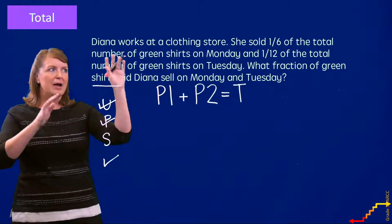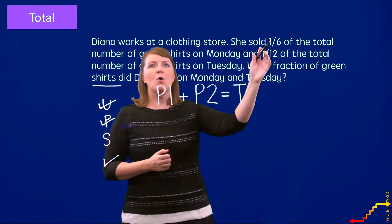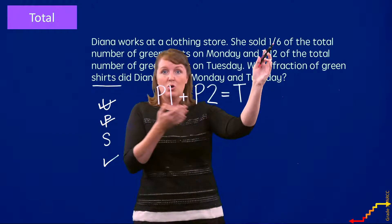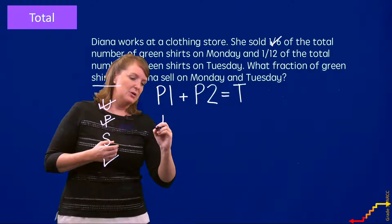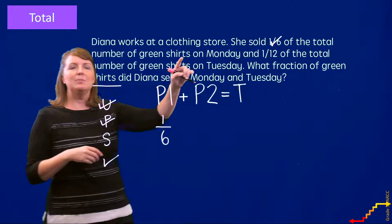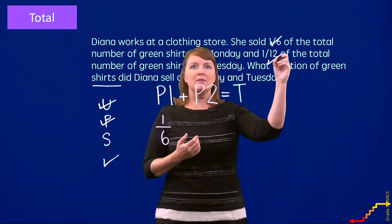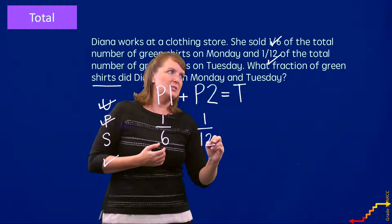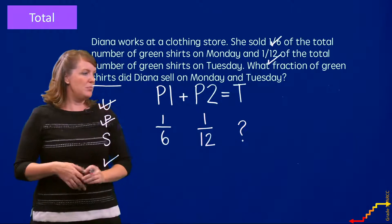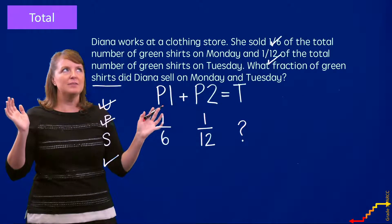Now I've got to solve this problem. I'm going to find the numbers and plug them into my total equation. She sold one sixth of the total green shirts on Monday — does one sixth tell us about the parts or the total? One sixth tells us about one of the parts, so I write it under P1 and check it off. She sold one twelfth of the total shirts on Tuesday — does that tell us about one of the parts or the total? That tells us about one of the parts, so I write that under P2. And we have to figure out what fraction she sold on Monday and Tuesday — so the total is unknown, and I'll mark it with a question mark.